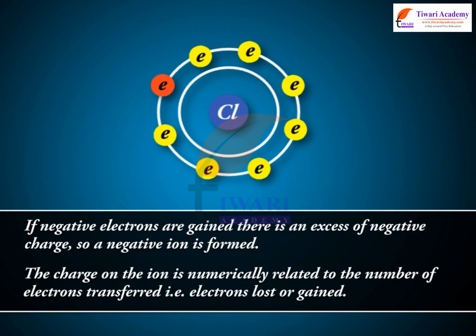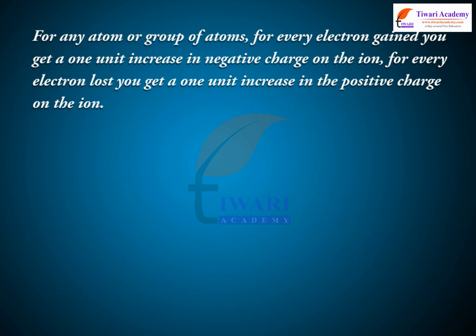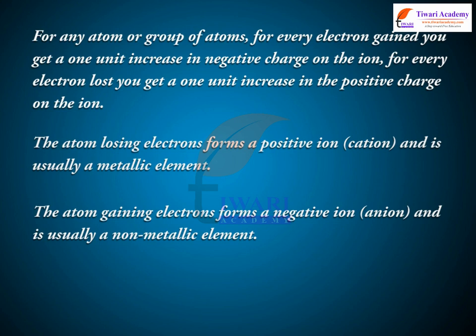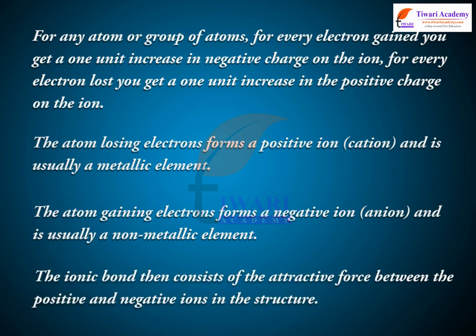The charge on the ion is numerically related to the number of electrons transferred — i.e., electrons lost or gained. For any atom or group of atoms, for every electron gained you get a 1-unit increase in negative charge on the ion; for every electron lost, you get a 1-unit increase in positive charge. The atom losing electrons forms a positive ion (cation) and is usually a metallic element. The atom gaining electrons forms a negative ion (anion) and is usually a non-metallic element. The ionic bond then consists of the attractive force between the positive and negative ions in the structure.